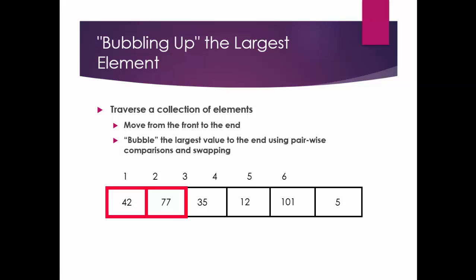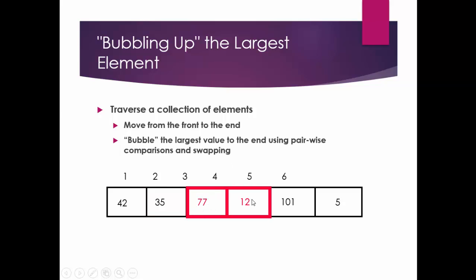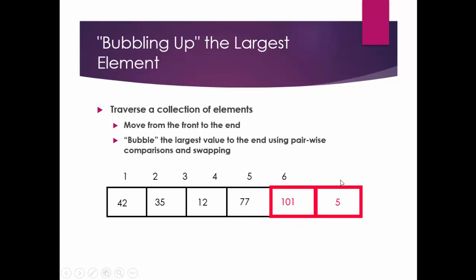The largest element right now is 77, so let's swap. Next, swapping will be done between 35 and 77 — since 77 is greater than 35, let's swap again. Now the next swap is between 77 and 12 — 77 is greater than 12, so 12 comes first, let's swap. Now 77 and 101: 77 is smaller than 101 so no swapping required. Then 101 and 5: 5 is smaller so 5 comes here and 101 goes to the last.